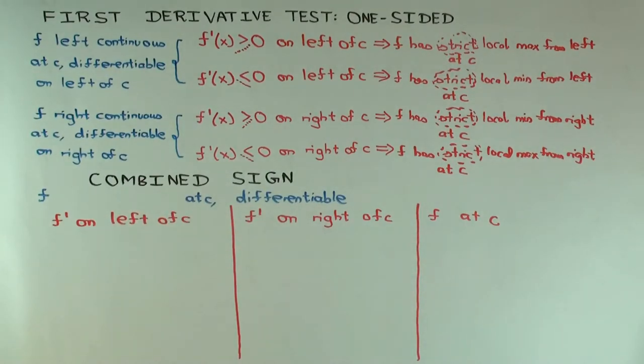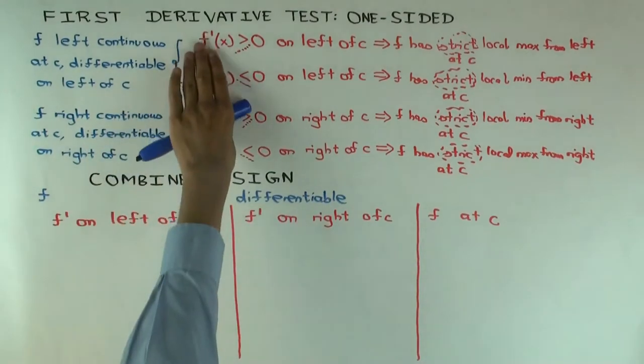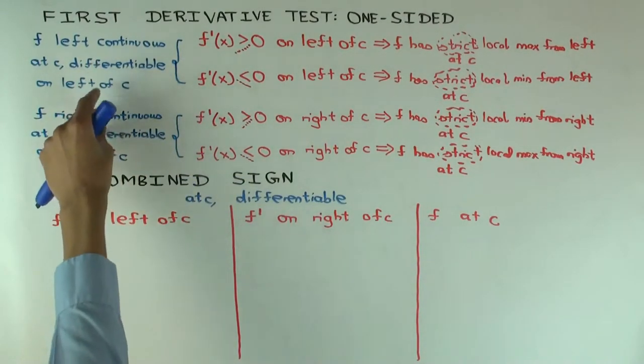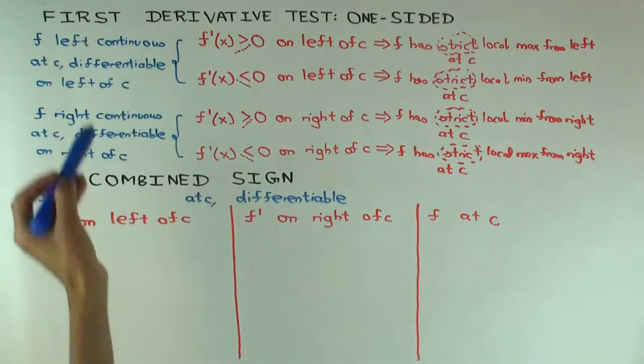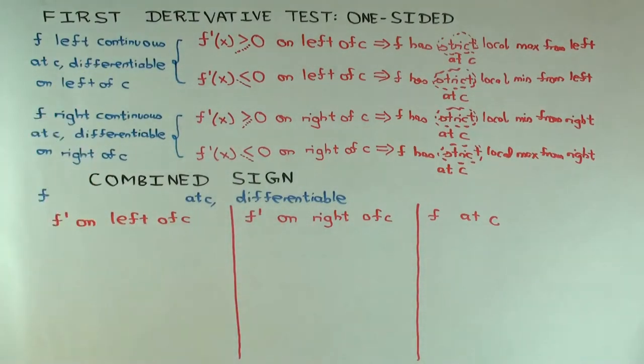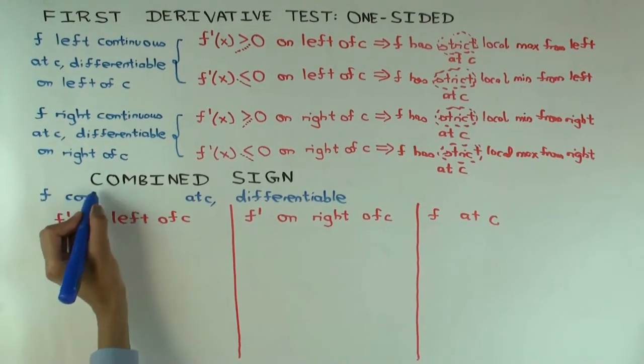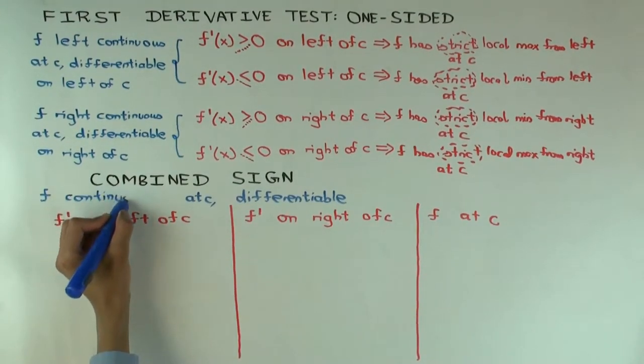What's zero? No, no, just this part, the blue ink part. I want to say both of these are true. So what's the way of saying both these conditions are true? So f is continuous? Continuous at c. And differentiable on the left and right of c.